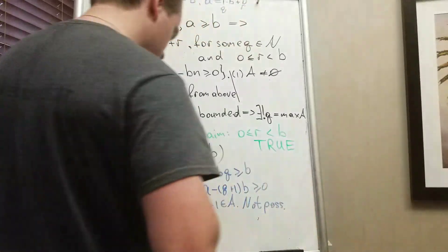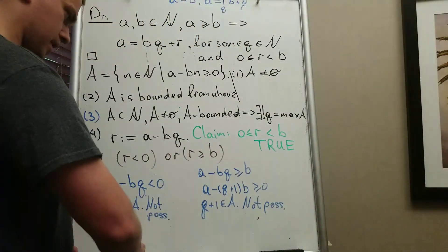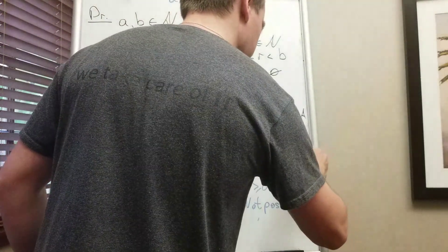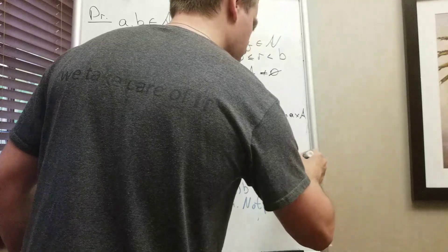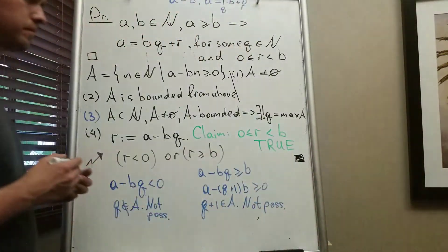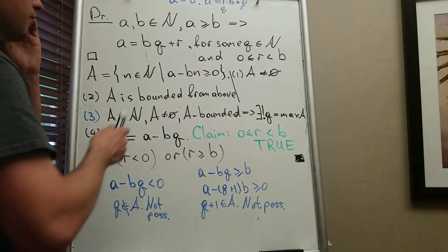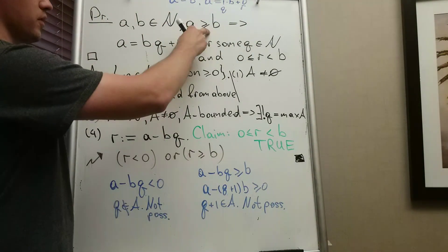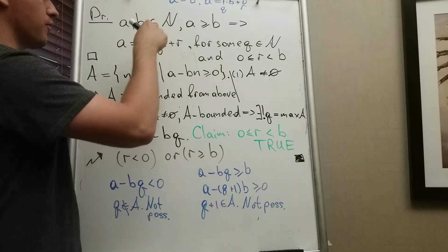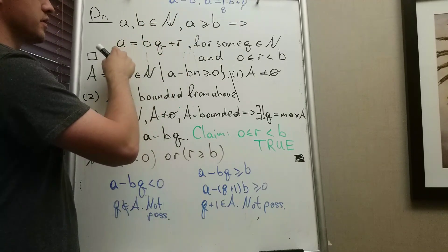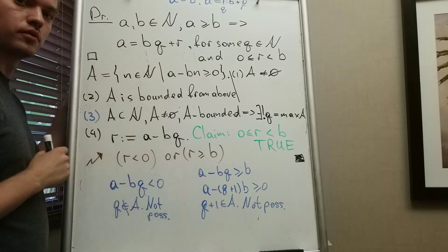Since both R < 0 and R ≥ B are impossible, we conclude 0 ≤ R < B. And here we are essentially done, because we have shown that for any two natural numbers A and B, we can find Q and R such that A = BQ + R with 0 ≤ R < B.